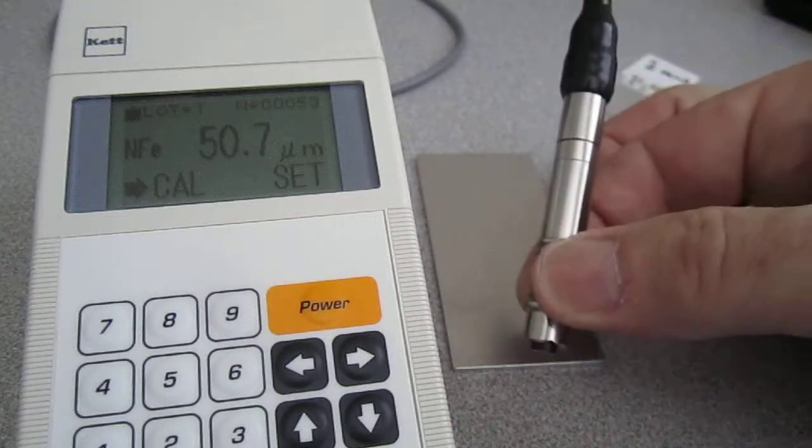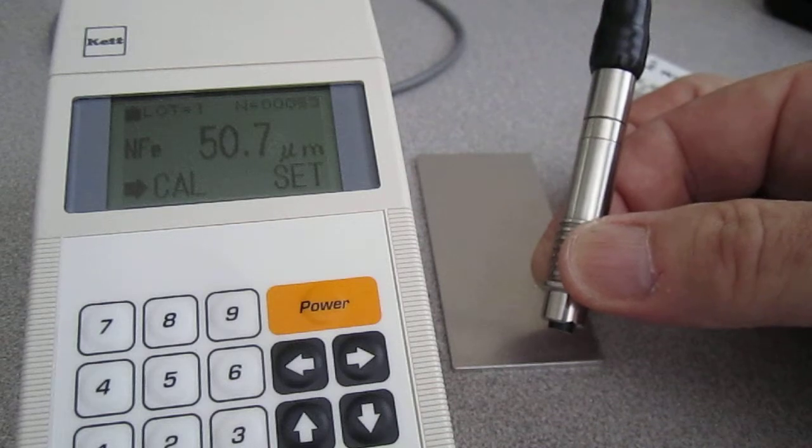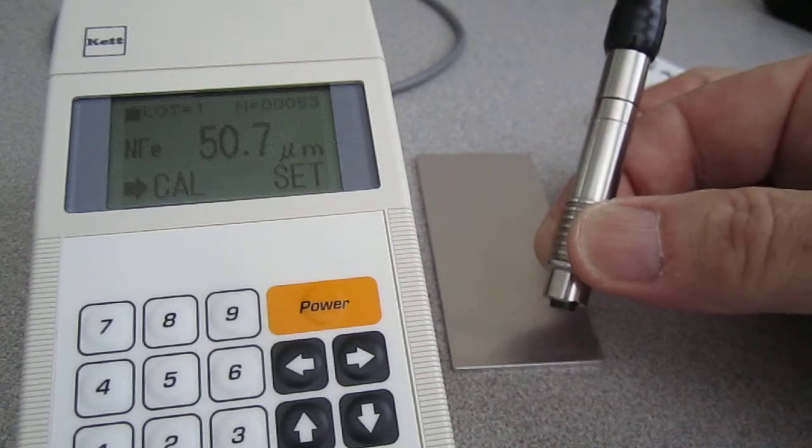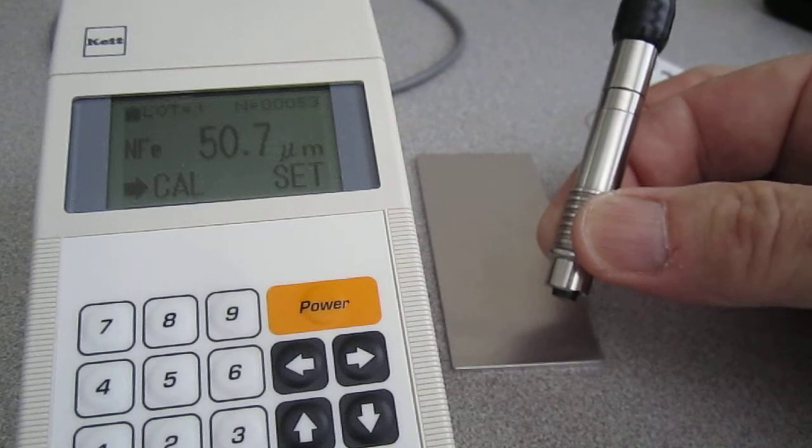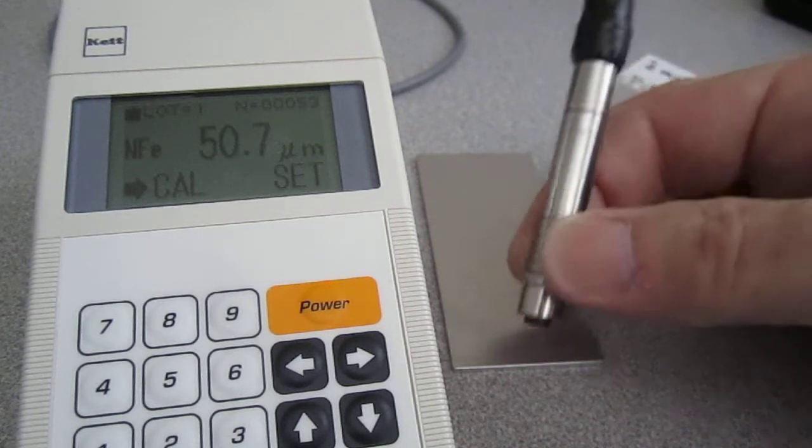What we're going to do today is demonstrate our L-373 series of coating thickness gauges. For all intents and purposes, this works the same as our 200 series and our 990 series, but it makes for a nice, simple demonstration, as you can see the display, and it also shows the probes.